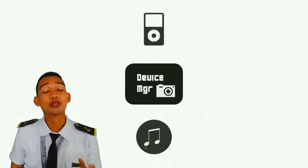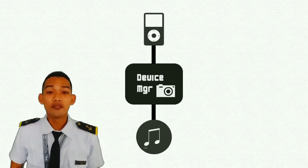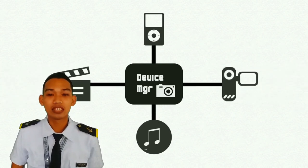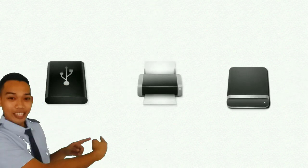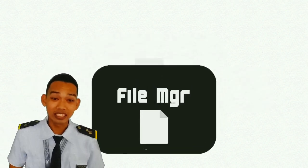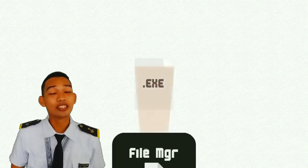The device manager monitors every device, channel, and control unit. It has to choose the most efficient way to allocate all of the system devices that are connected to the computer. Flash drives, printers, and external hard drives are examples of this.